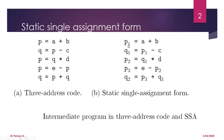Now let us see how SSA form will be useful. First, p1 equal to a plus b. Q is calculated for the first time, so q1 equal to p1 minus c. Now we are overwriting the value of p, so it will be written as p2. p2 equal to q1 multiplied with d. The third time p value is overwritten, it will be written as p3 equal to e minus p2, using the most recent value p2.